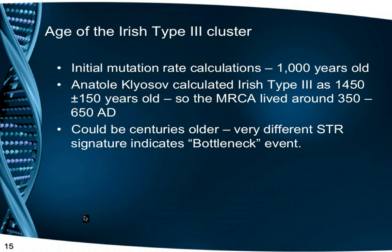While this indicated the approximate time when the cluster flourished, considering how different the STR signature is from other clusters, it was a guess that many centuries had passed since this branch had left the main phylogenetic tree. Such an event is called a bottleneck, where a previous colony reaches a situation where only one male from that line has surviving male progeny, and so all future members are descended from him, which can mean the progenitor of the haplogroup may have lived much, much earlier.